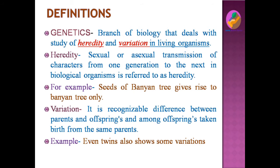Not only this — offspring born from the same parents also have some variations among themselves. For example, even twins show some variations. Twins are different from their parents and also show differences among themselves. This is known as variation. So genetics is the branch of biology which deals with both heredity and variation.